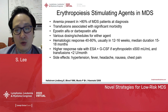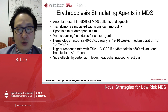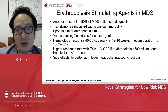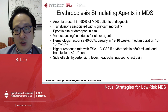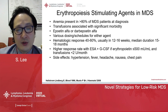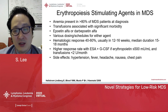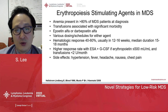In some instances, there are reported higher response rates when combining these agents with G-CSF agents, especially if erythropoietin level is less than 500 and transfusion requirements are less than two units per month. Most common side effects of these agents are hypertension, fever, headache, nausea, and chest pain. It is important to note that these agents should be held if hemoglobin is greater than 10, given the risk of thrombosis.